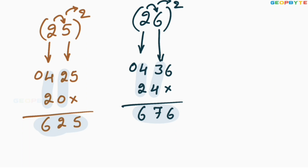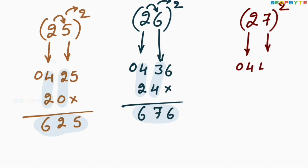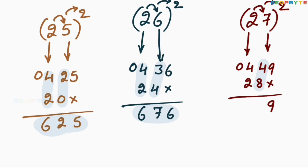Similarly, 27 whole square: 2 square is 04, 7 square is 49. Then 2 into 7 is 14, 14 into 2 is 28. Leave the first space, write 28 here. Add these two values: 9, 4 plus 8 is 12 — write 2 here, 1 carry forward. Then 1 plus 4 plus 2 is 7. Therefore, 27 whole square is equal to 729.